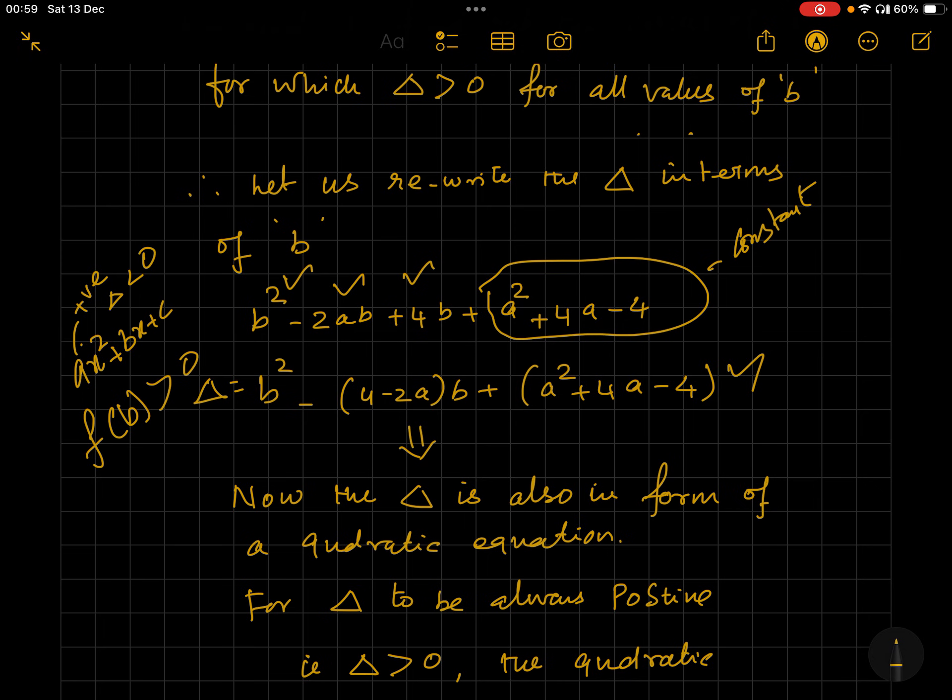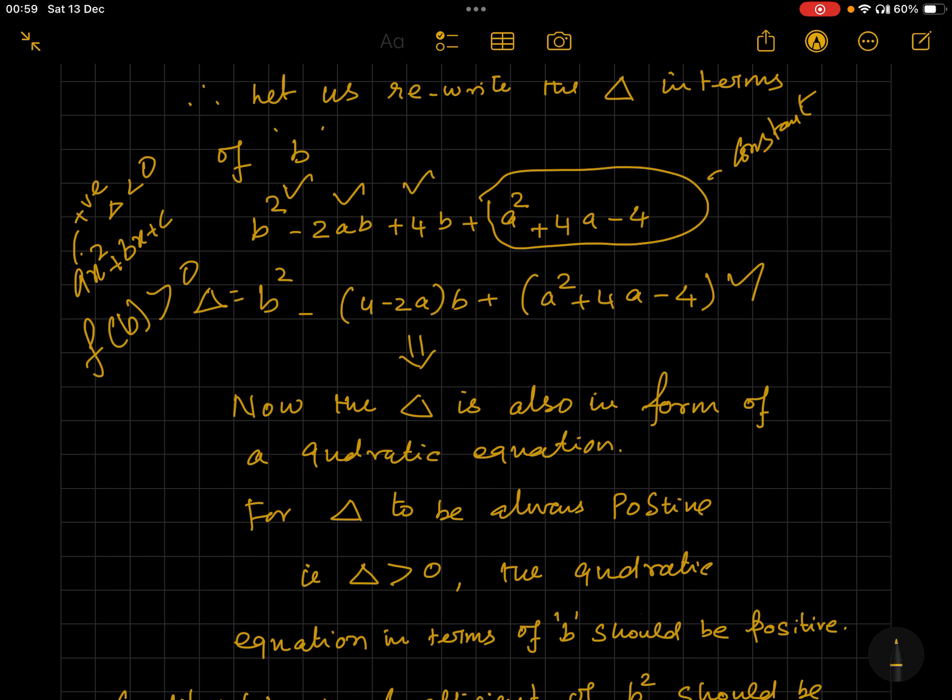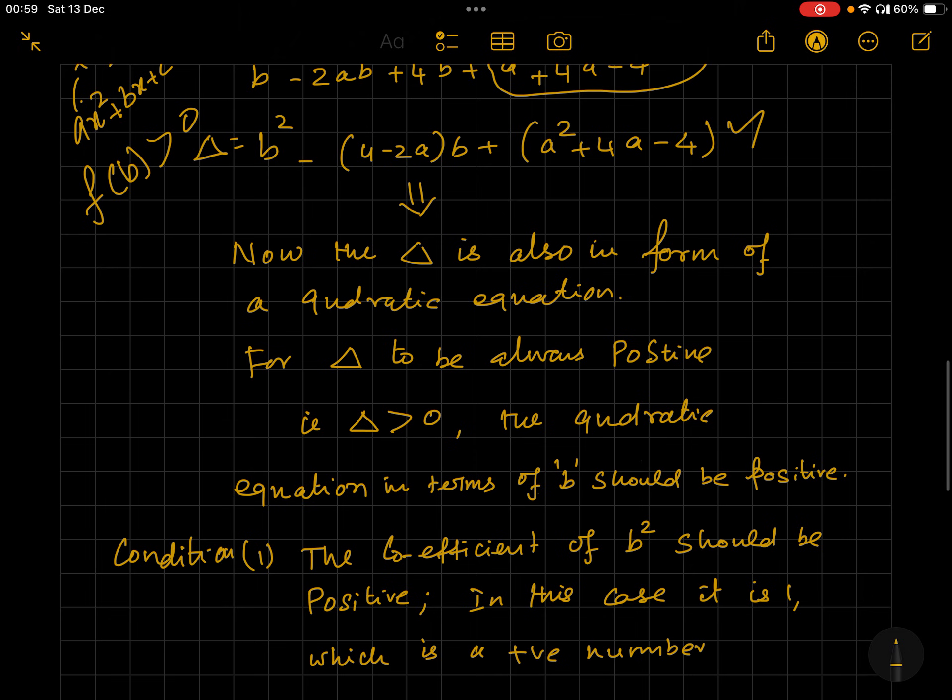than zero, but we want delta here less than zero because here we are evaluating a quadratic expression itself. See, for finding out the roots we use the discriminant, but now for finding out whether the expression itself is positive, there are two conditions: one is the coefficient of x² is positive - in this case